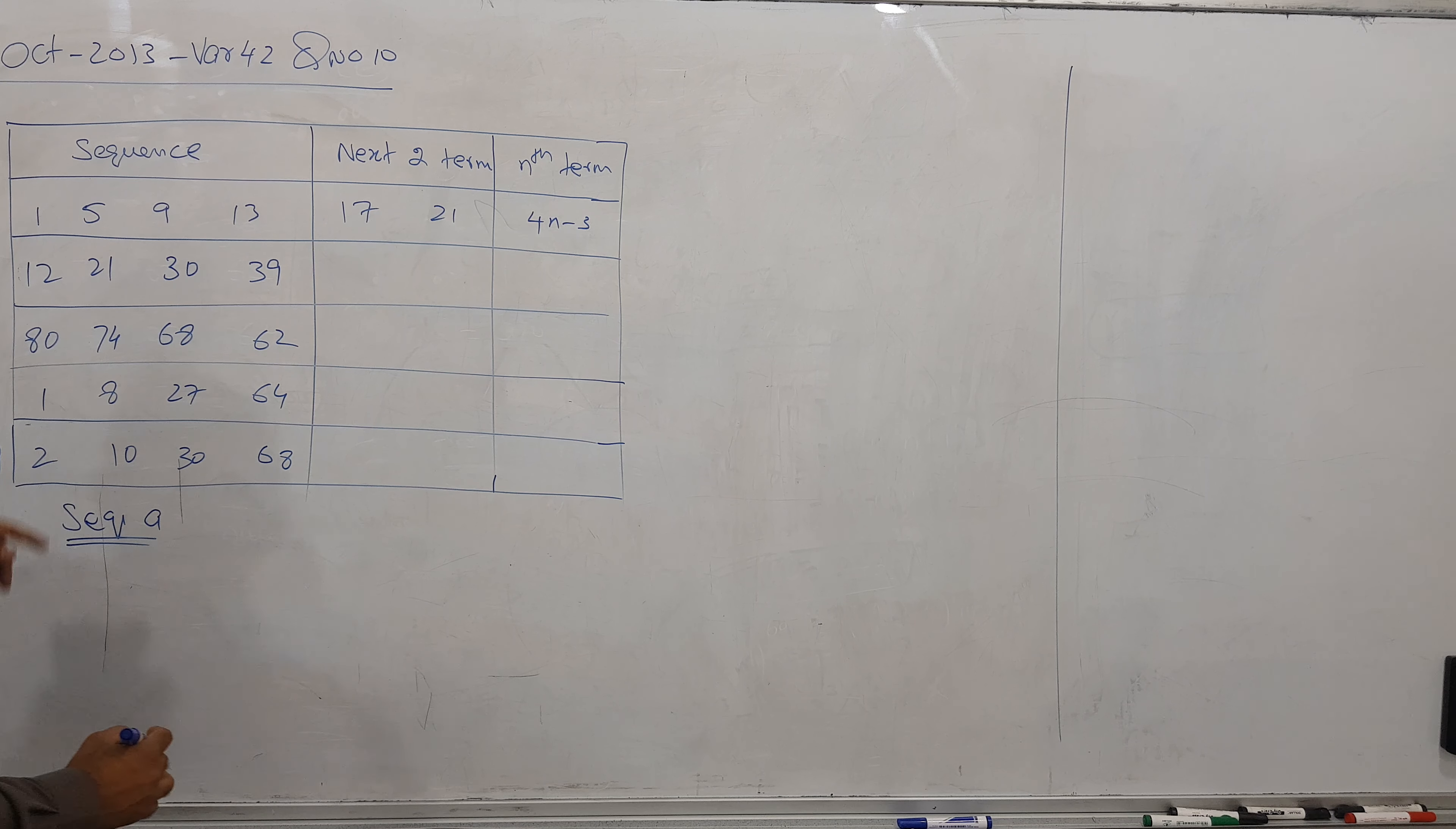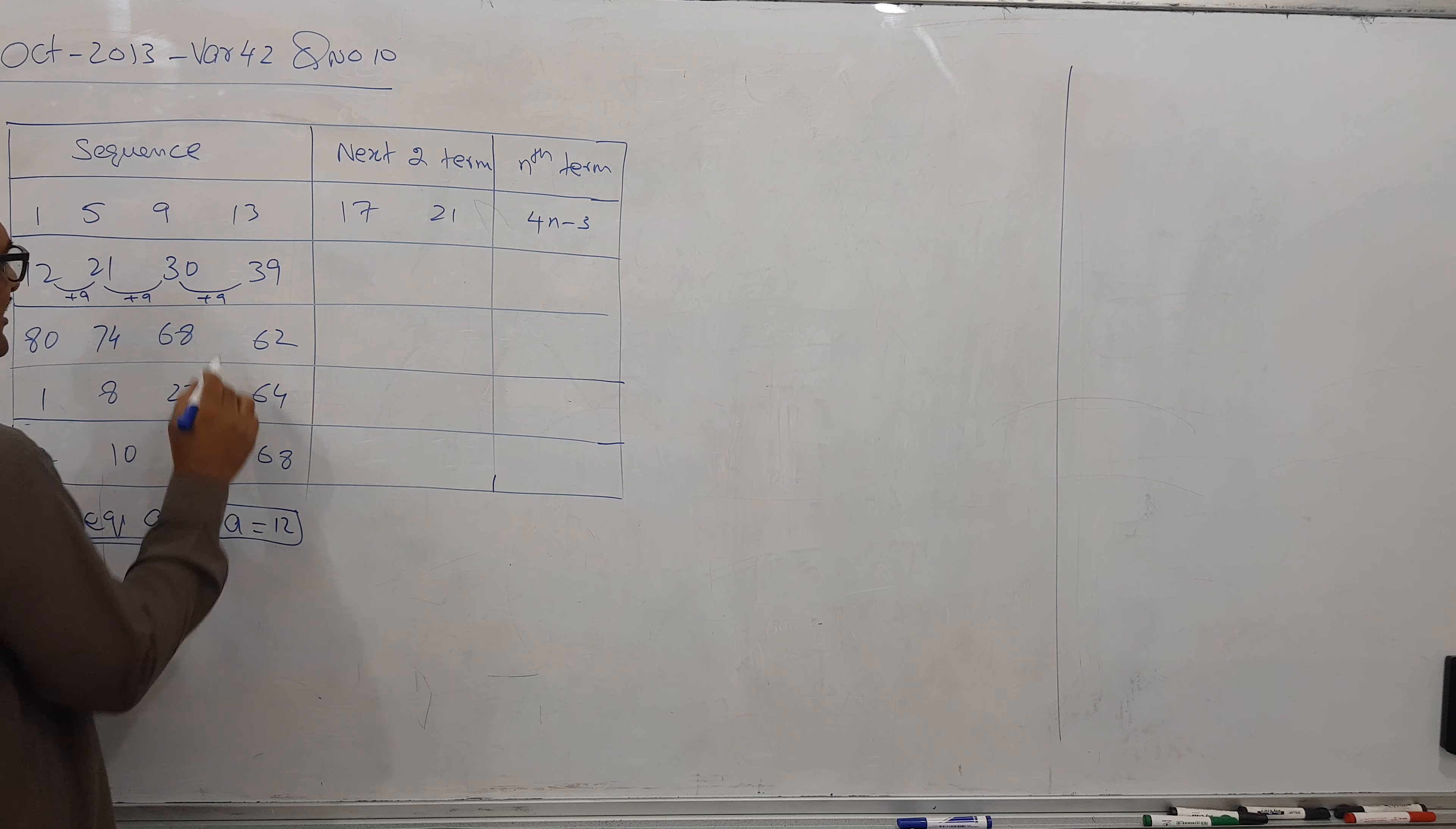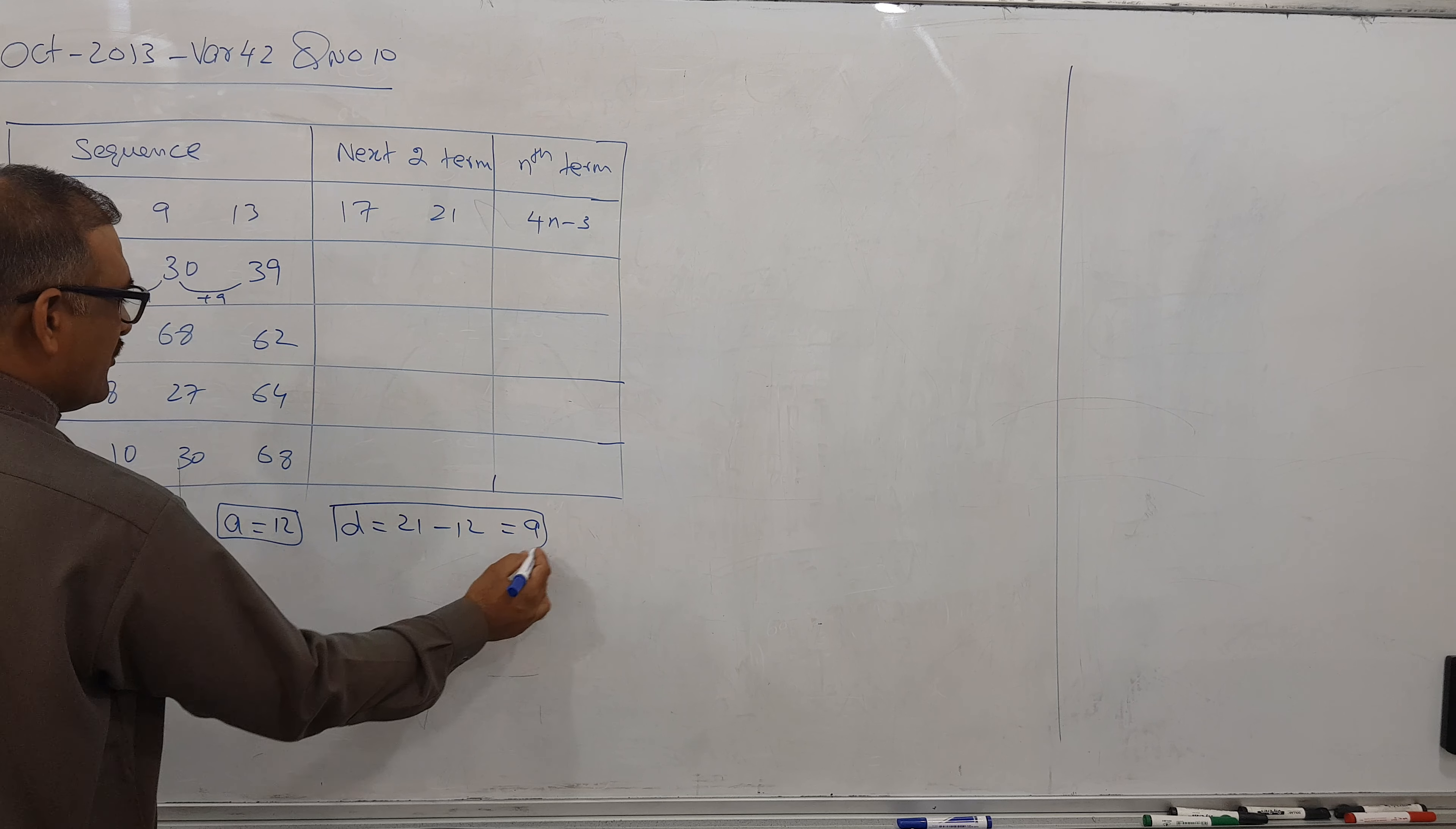Let's talk about sequence A. If you look at carefully, we have our first term here. The first term is 12 and if I subtract them I get 9, plus 9 I get this, plus 9. So it means common difference is 21 minus 12 equal to 9. So common difference is very clear.